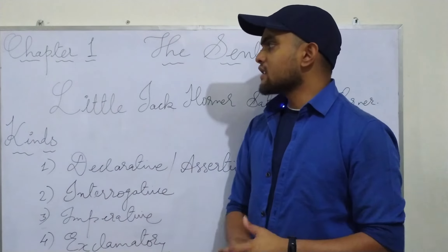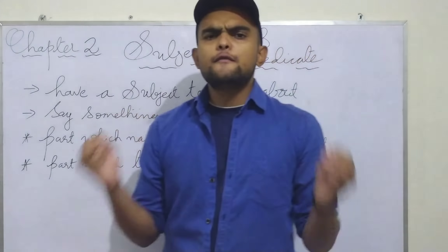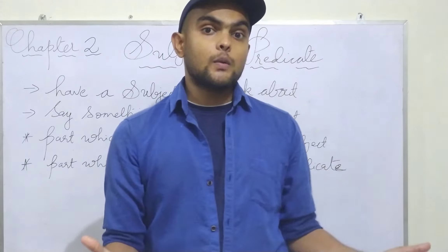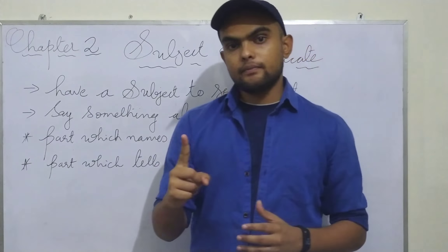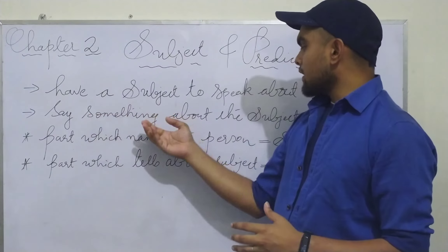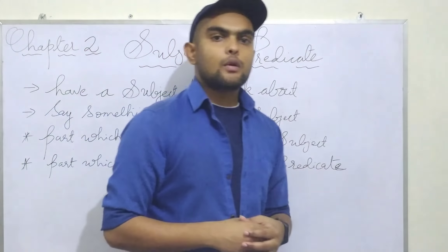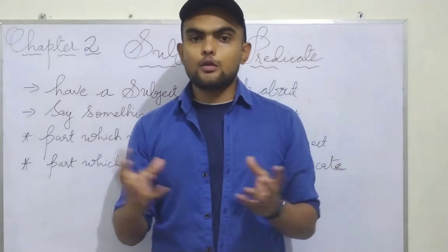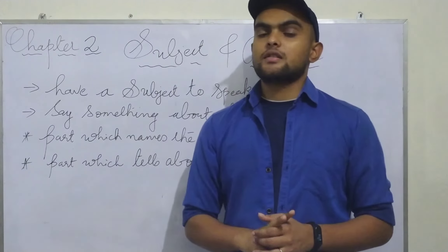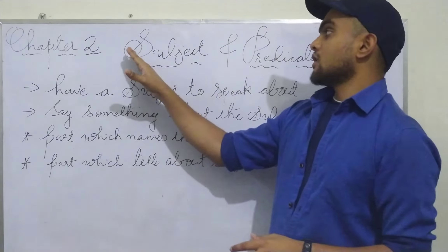Moving to the second chapter — subject and predicate. Everything under the sky has a name. It can be a living thing or a non-living thing, but everything has a name. Have a subject to speak about — say something about the subject. Everything and everyone should have something to tell about. So, in a sentence there will be two parts — a sentence is divided into two parts: subject and predicate.